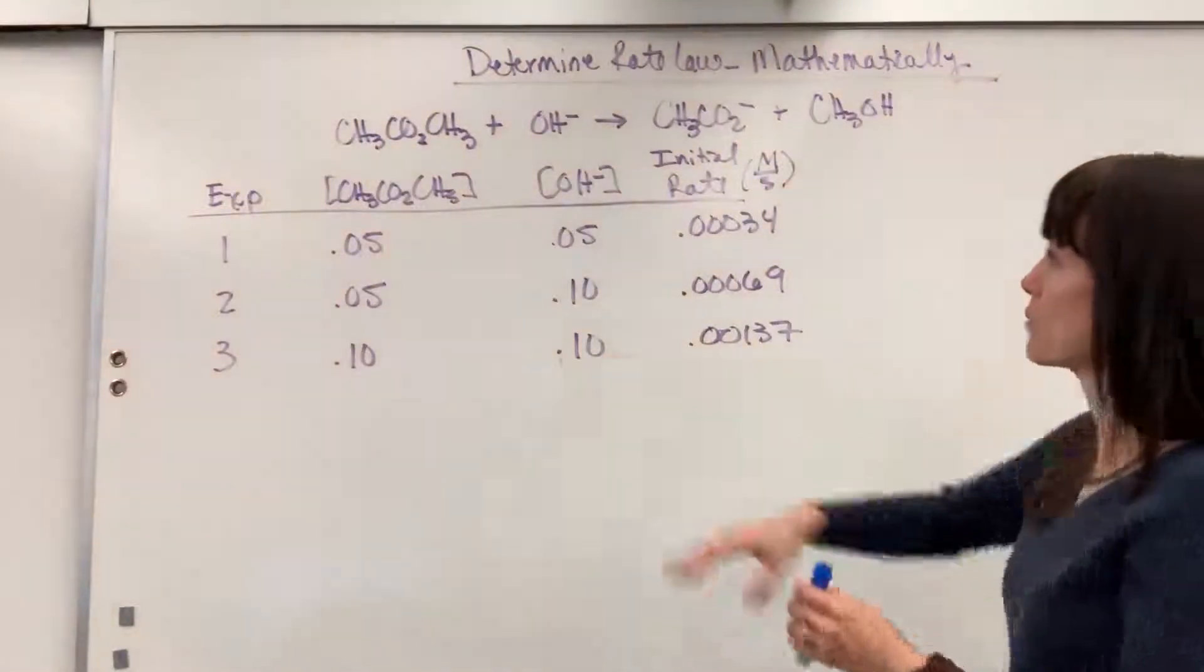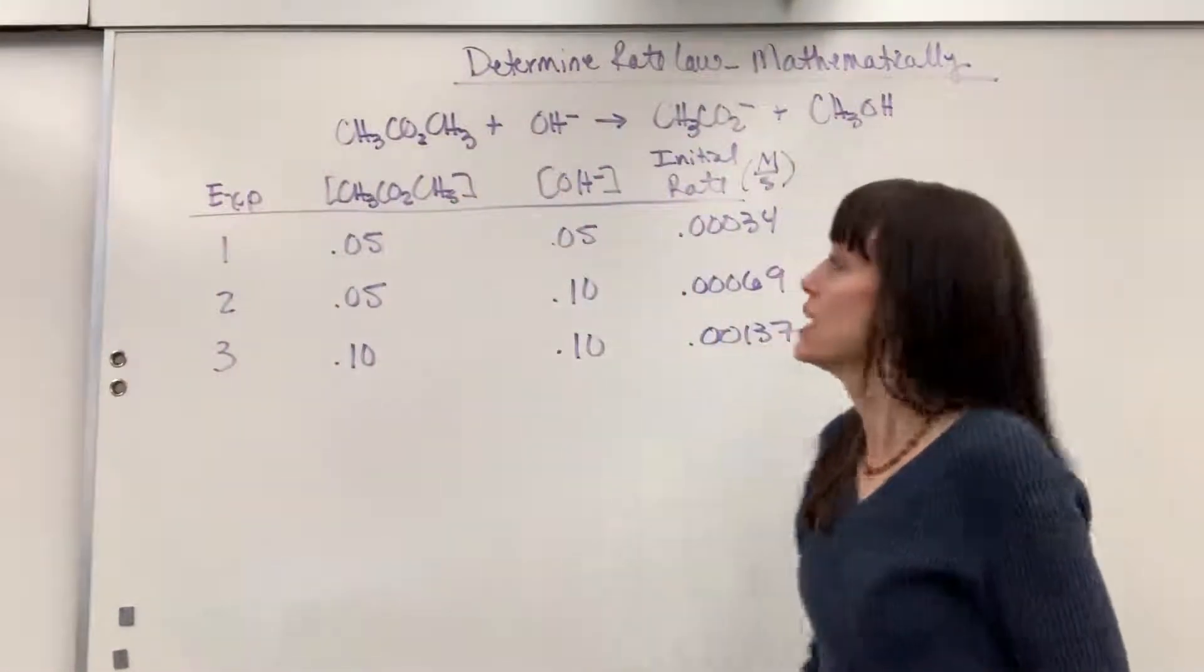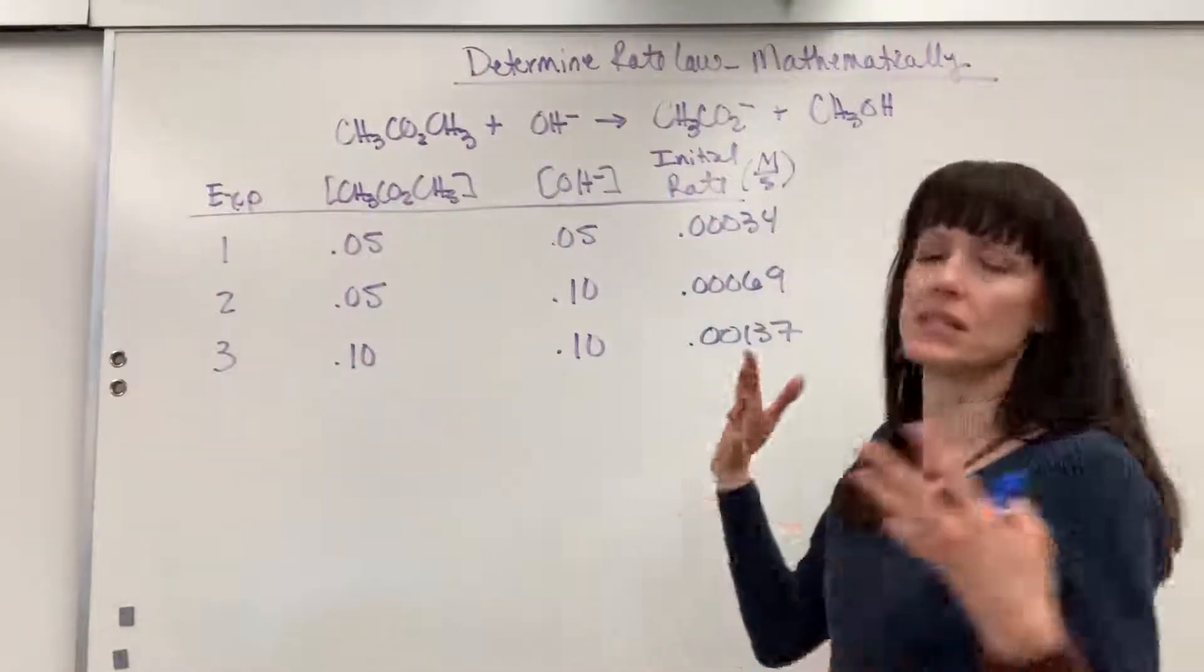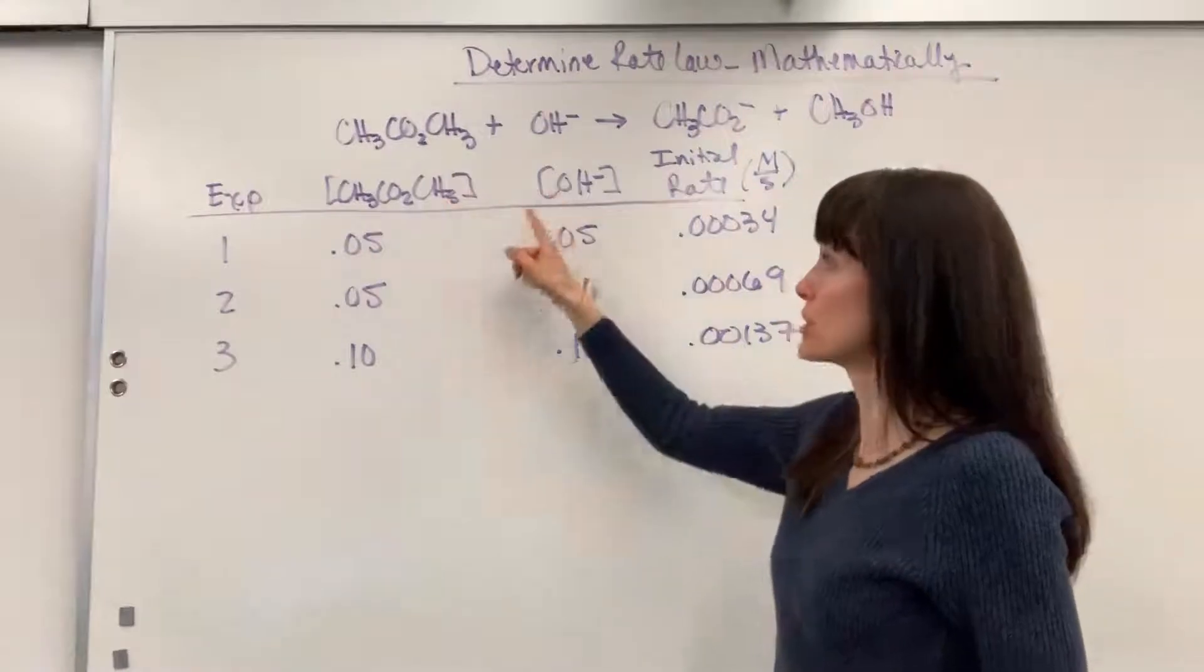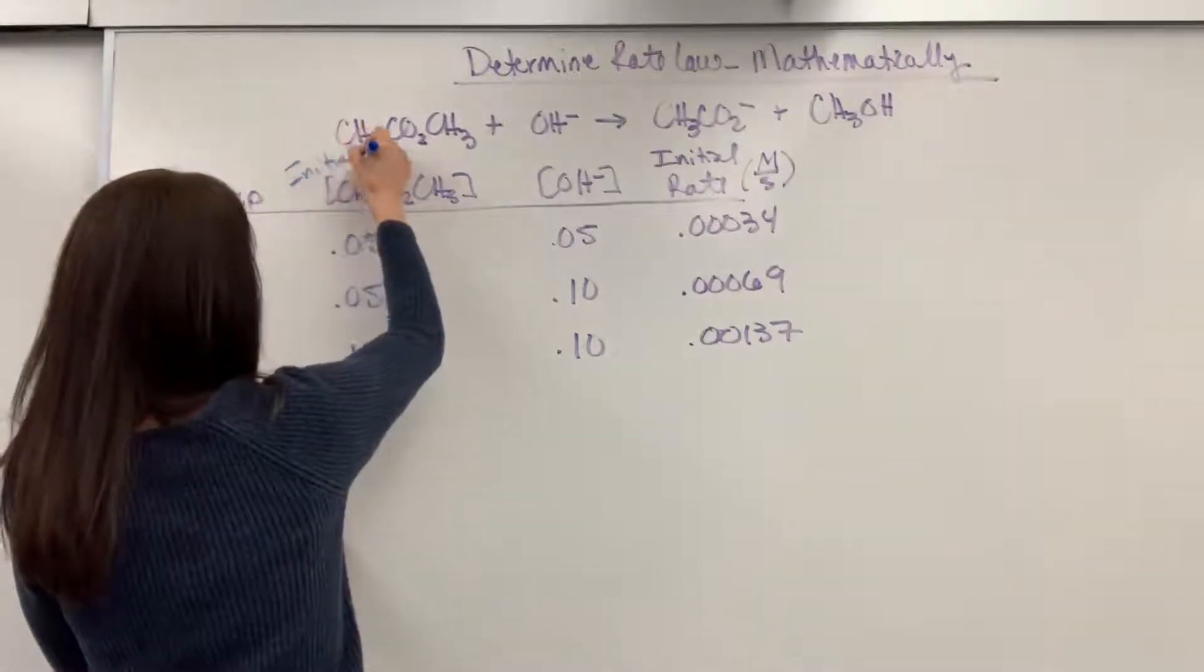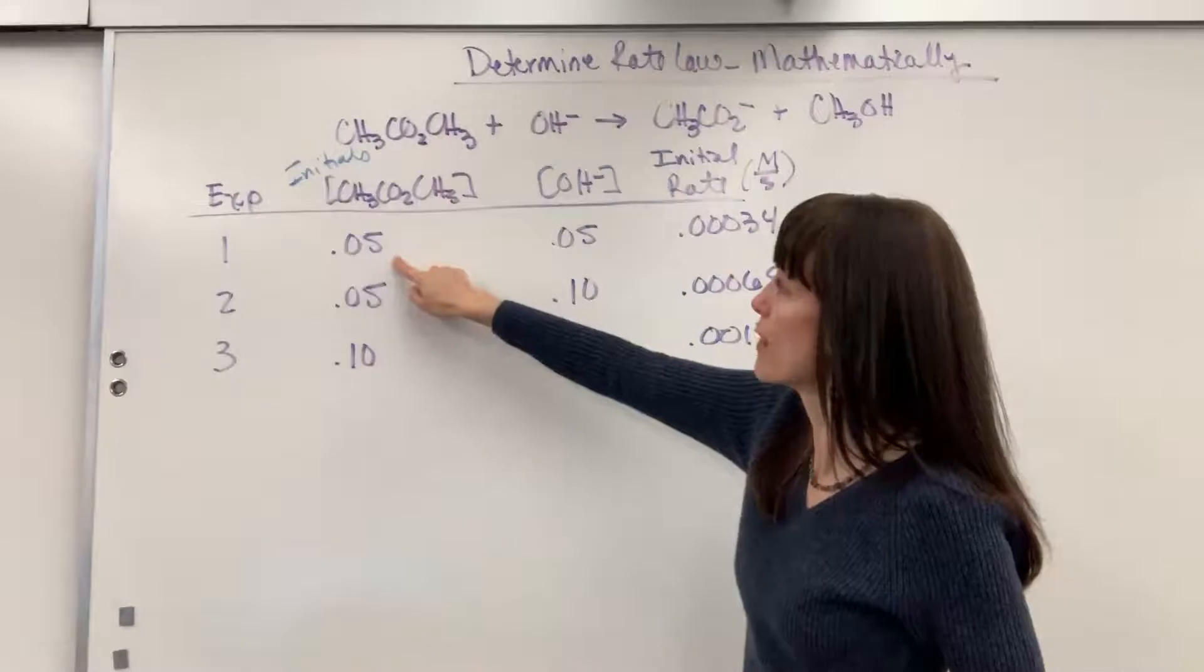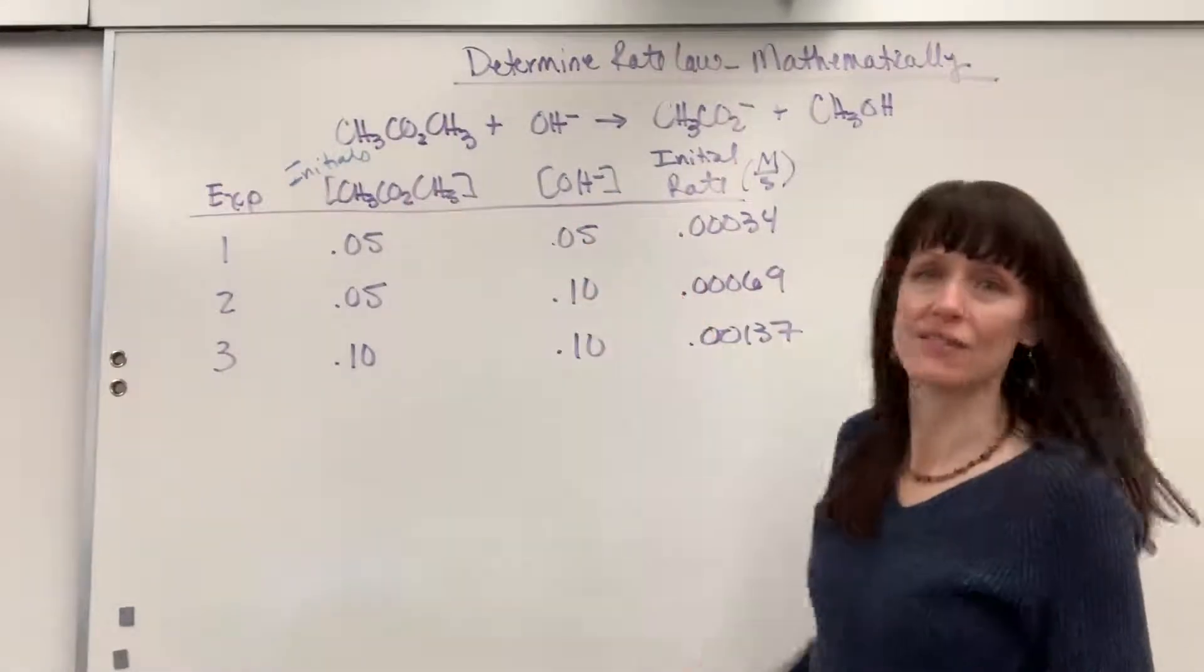So let's do this together. You begin in a problem where you have an equation and then they give you a set of data. And in the data, they're going to run different experiments, maybe three to six experiments, something like that. And then they're going to give you concentrations. Now these are the initial concentrations. What you begin with, so for example, I would begin with 0.05 moles of this methyl acetate where we react with 0.05 moles of the hydroxide.